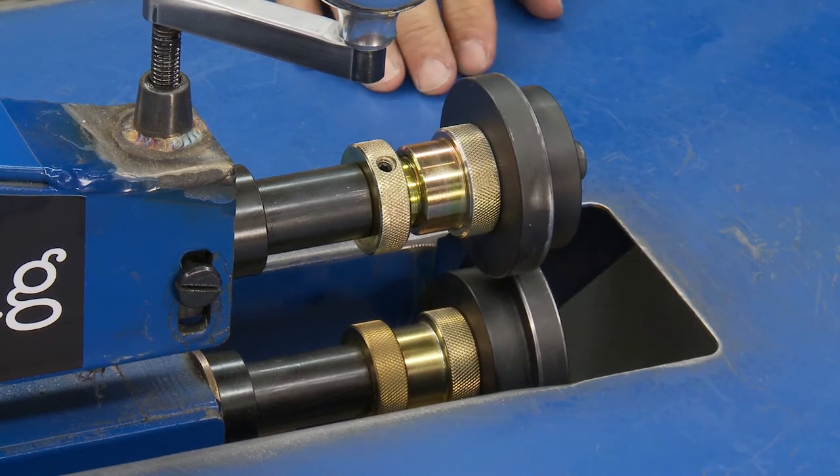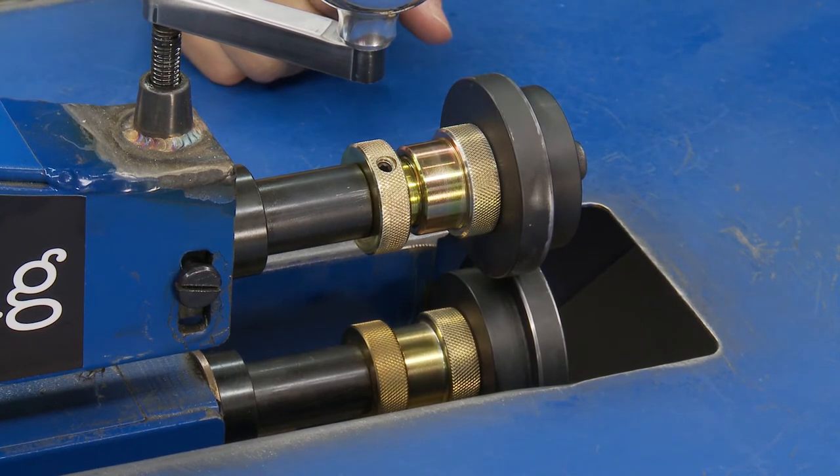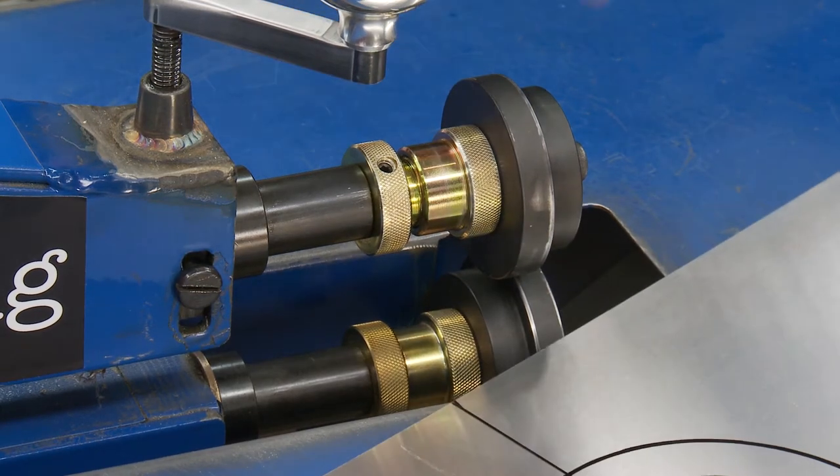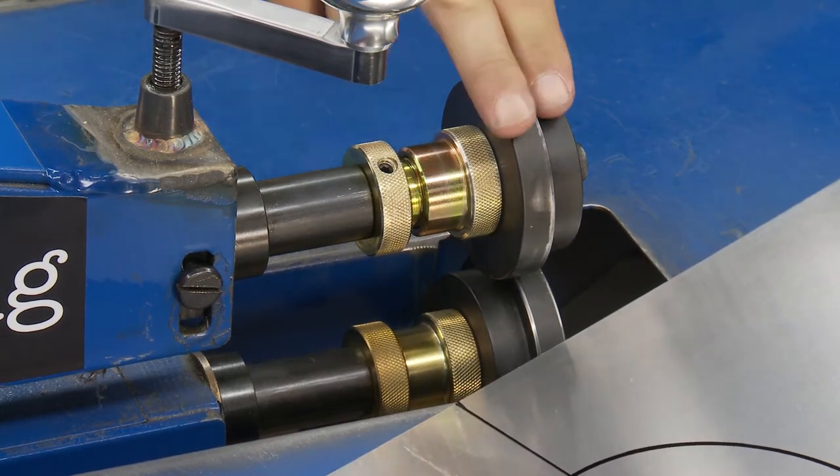Now over here at my bead roller, I've gone ahead and put on a set of standard steel step rolls, and what we're going to do is run on this piece of aluminum, and we're going to find out what happens when you run steel on the aluminum.